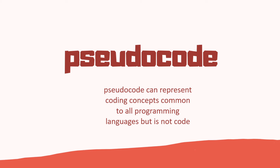Pseudocode represents coding concepts common to all programming languages, but it's not actual code. We can use pseudocode to design programs and understand them, but we can't get a computer to run pseudocode. We learn a language like Python to write runnable code, while flowcharts and pseudocode help us design and plan how a program works.